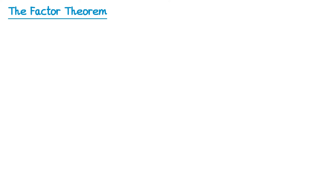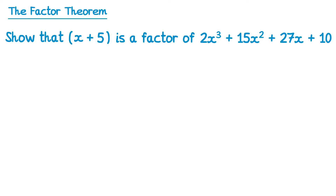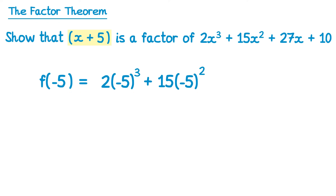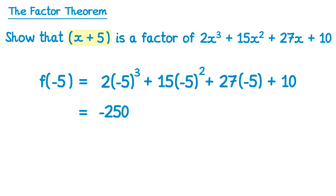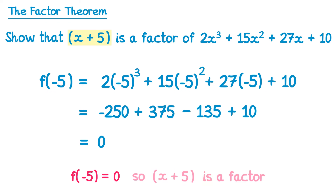Let's look at how questions are written in exams. 'Show that x plus 5 is a factor.' The factor is x plus 5, so we substitute the opposite sign — negative 5 — and need to get 0. f of negative 5 is 2 lots of negative 5 cubed plus 15 lots of negative 5 squared plus 27 lots of negative 5 plus 10. Because this is a 'show that' question, show all steps — don't just type it into your calculator. Negative 5 cubed is negative 125 and 2 lots of that is negative 250. Negative 5 squared is 25 and 15 lots of 25 is plus 375. 27 lots of negative 5 is take 135, then plus 10. This does indeed equal 0, so f of negative 5 gives zero and x plus 5 is a factor.